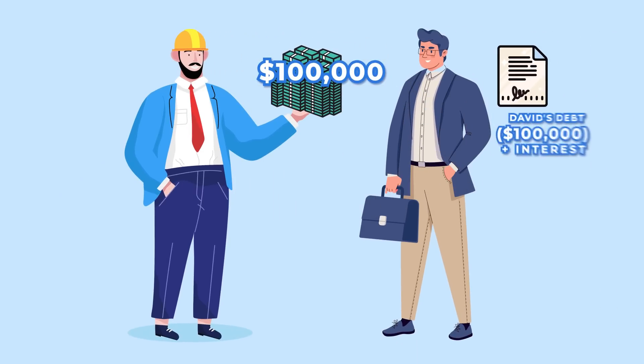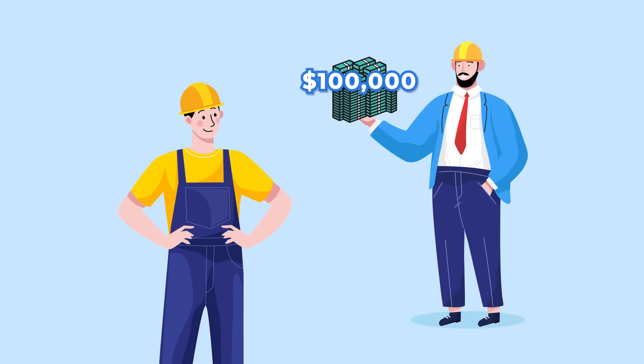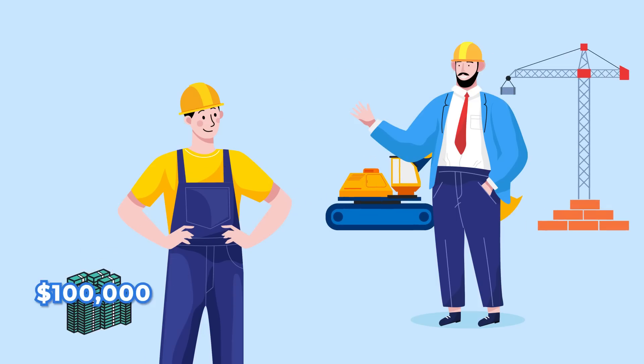In turn, David gives his friend a piece of paper — a title certifying a debt of $100,000. When the time comes to repay, David will deliver the $100,000 plus interest to whoever returns the bond. The next day, David goes to the construction supplier and buys the machinery and tools he needs with that $100,000. After the purchase, David is left without money and the $100,000 are now in the hands of the suppliers.